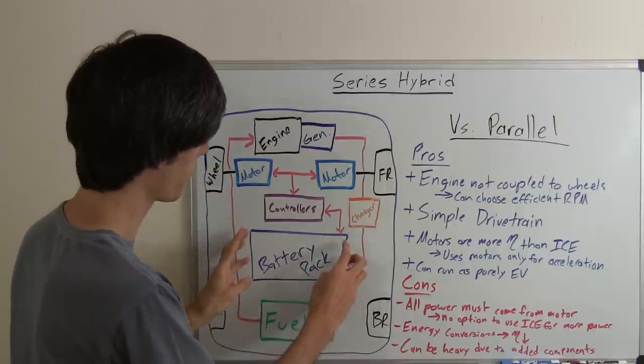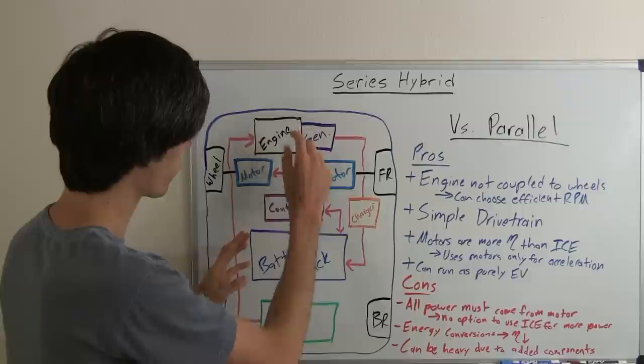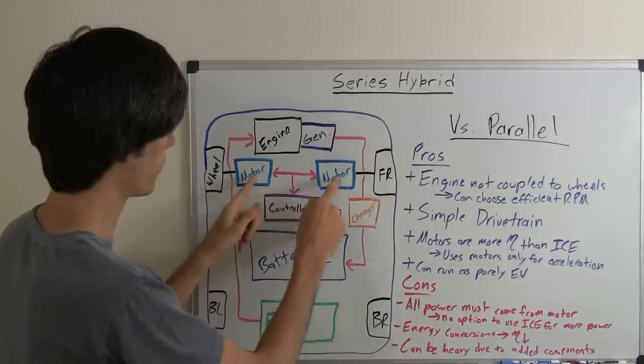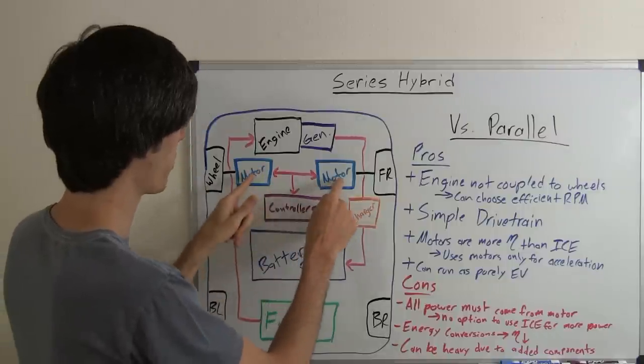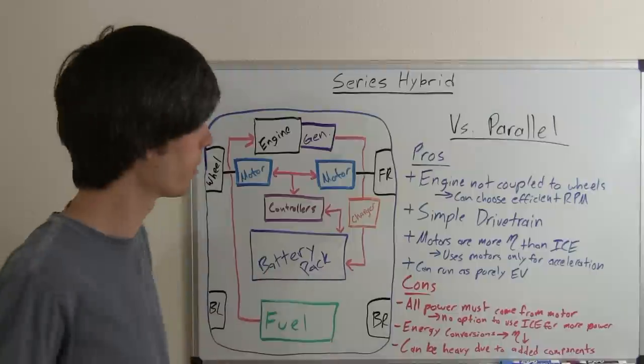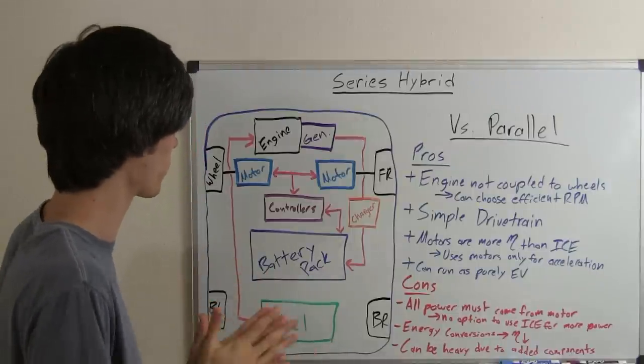That generator then sends a charge to a charger and the charger charges your battery pack. The battery pack then takes that energy created from the engine, sends it to the controllers which control the voltage sent to the motors. Then you send the power to the motors and the motors rotate your wheels. So it's a pretty simple system, that's the basics of how it works.